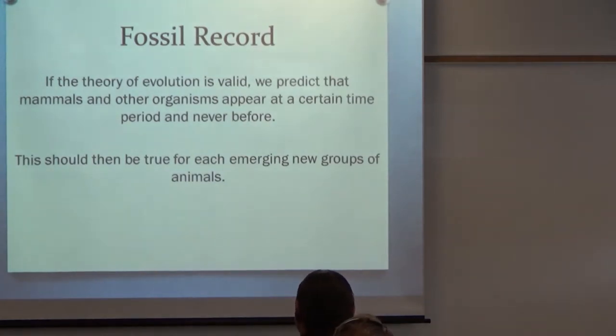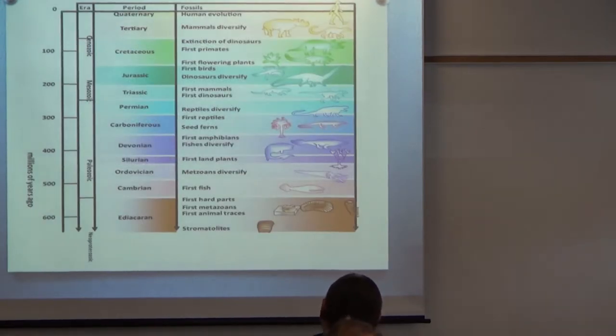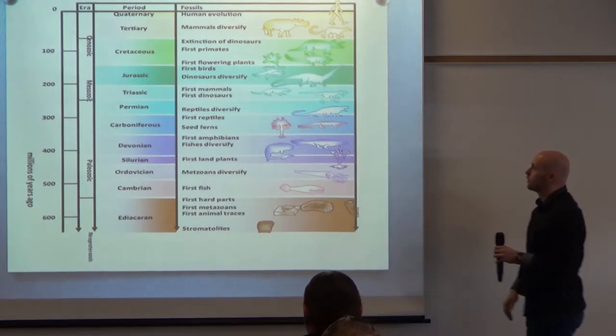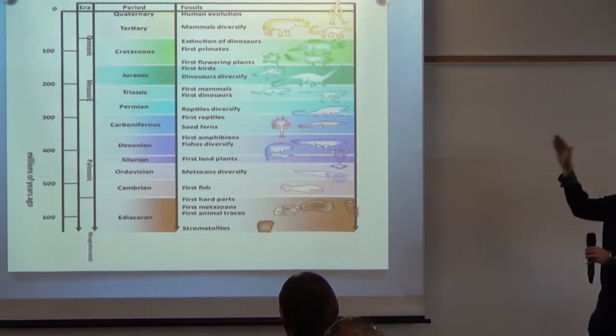Also, we should predict that at certain time points in the fossil record, certain animal groups would appear at a certain time. Because evolution tells us that animals as they exist today haven't always been around. Because they've been descended from other animal groups and different species. So, let's say for example, mammals weren't around at the beginning of life on Earth. So, they should appear at a certain point in the fossil record and not before. And when we look, that's exactly what we find. So, here are the very first appearance of mammals in the Triassic period about 250 million years ago. And they're obviously very different to the mammals we have today.